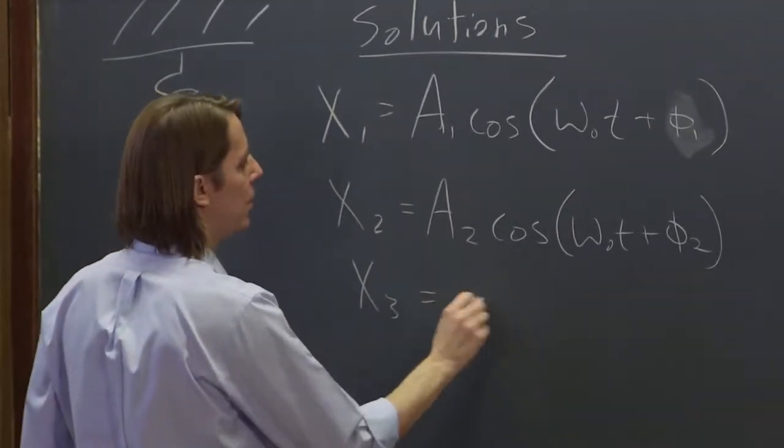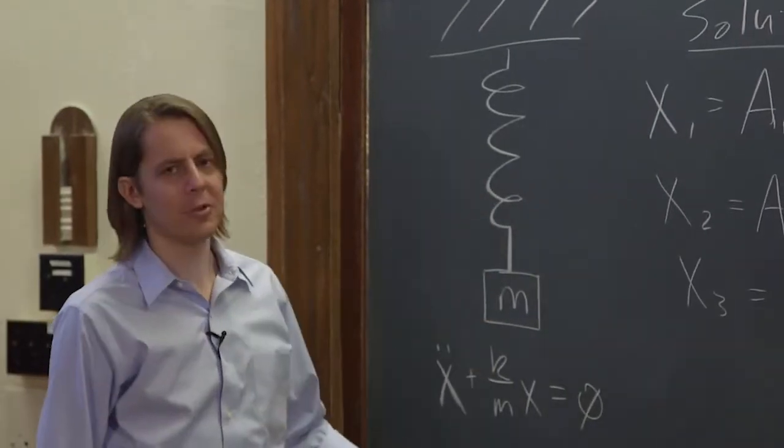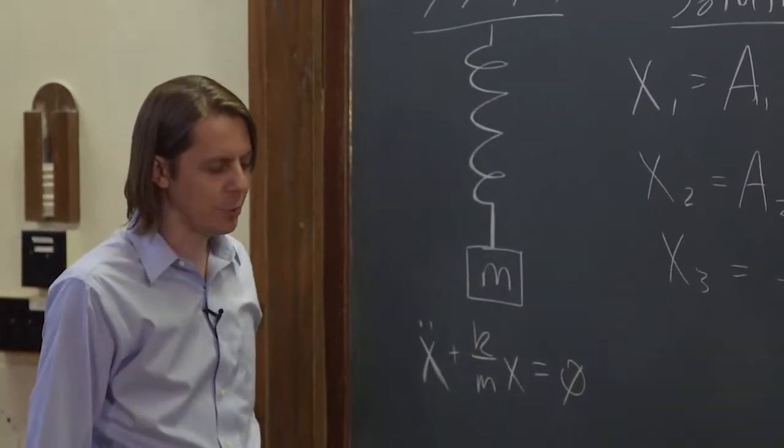So those are both perfectly fine solutions. You could have another solution, x3. You could go on and on. You could have many different solutions to the mass on a spring, because there could be many different kinds of motion.